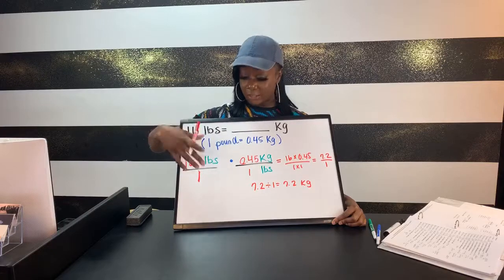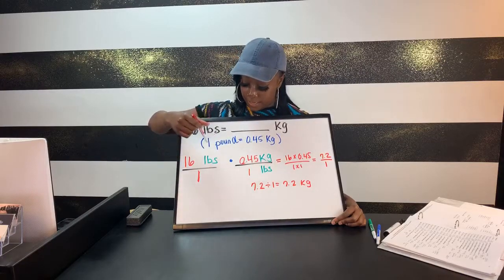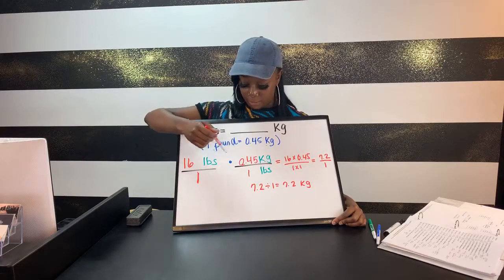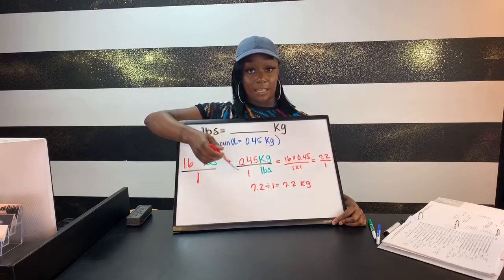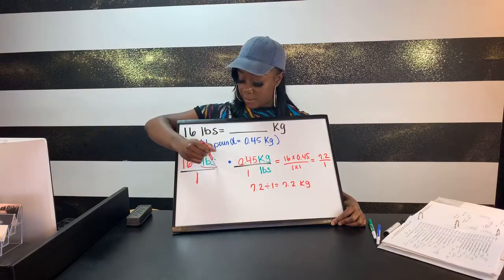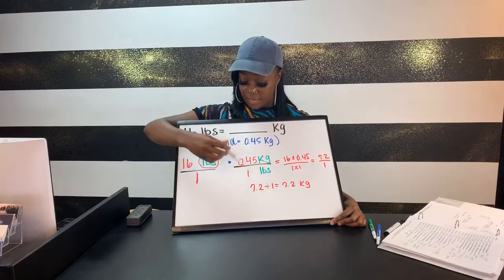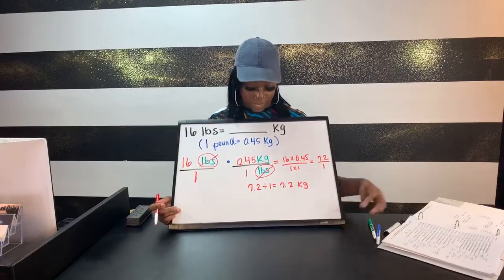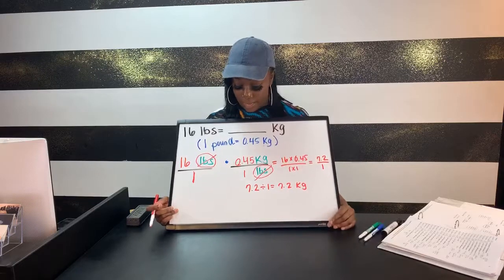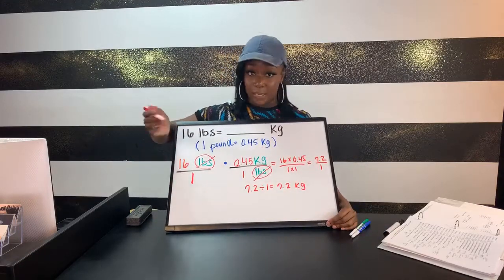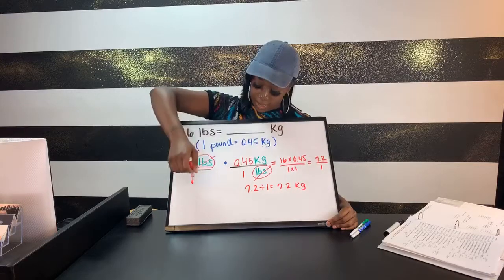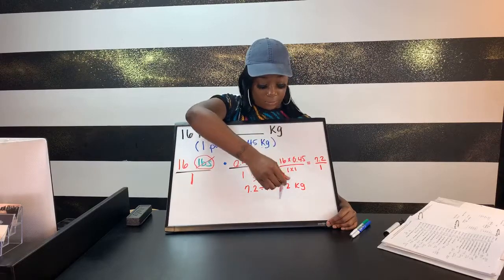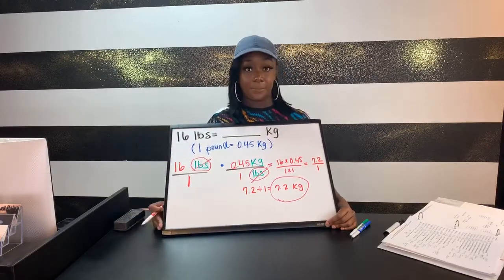This has to be written in a particular way — it's not always whatever comes first on top and second on the bottom. Since we have pounds here, in my second ratio pounds has to be on the bottom because these two need to cancel out, converting from pounds to kilograms and leaving me with kilograms. Then we multiply straight across just like multiplying fractions: 16 times 0.45 and one times one gives 7.2 on top, one on the bottom. Dividing gives us 7.2 kilograms.